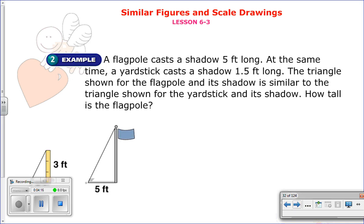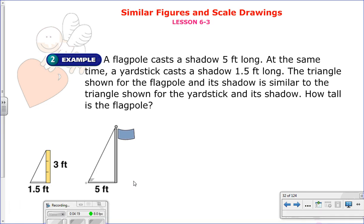I have a ruler and a flag. And I'm moving that box so you can see it a little better. A flagpole casts a shadow 5 feet long. At the same time, a yardstick casts a shadow 1.5 feet long. The triangle shown for the flagpole and its shadow is similar to the triangle shown for the yardstick and its shadow. How tall is the flagpole? So here you can see they make the shape. We have a flag, which we know it has a measurement, or the shadow goes 5 feet. And for this meterstick, the shadow is 1.5 feet. So we need to do the same thing we've been doing.